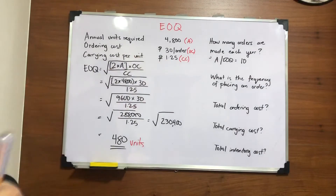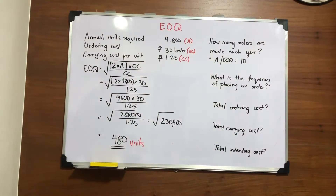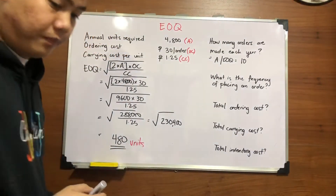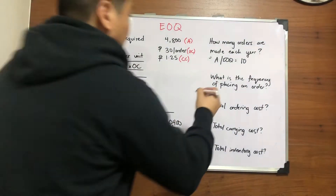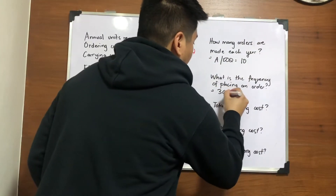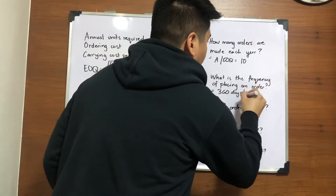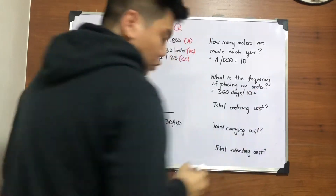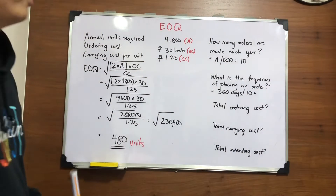For the second question — what is the frequency of placing an order? You multiply by the total days in a year, which is 360 days, divided by 10. You would have to purchase every 36 days.